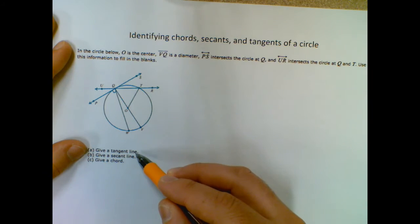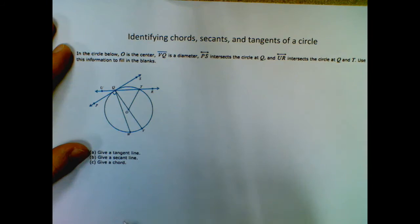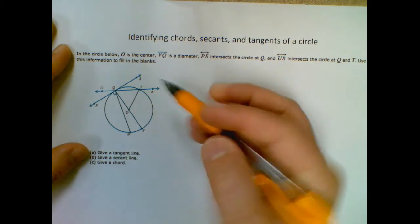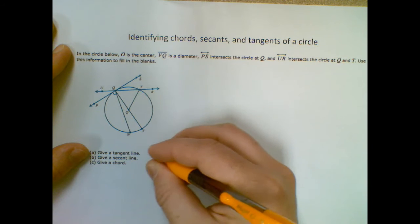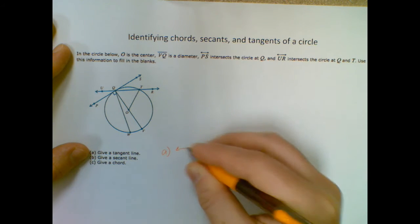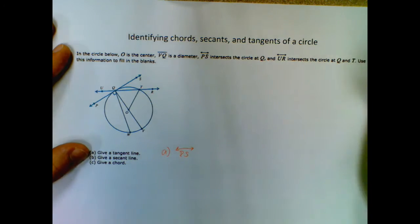So we want a tangent line, so we want a line that hits our circle exactly once, and the only time that happens is this line here. So the tangent line I'm looking for for part A is line, don't forget your notation there, PS or SP.